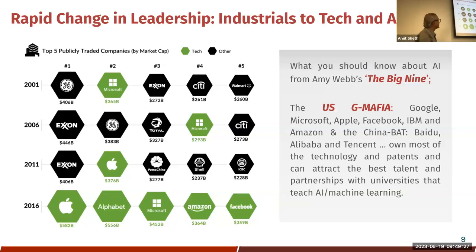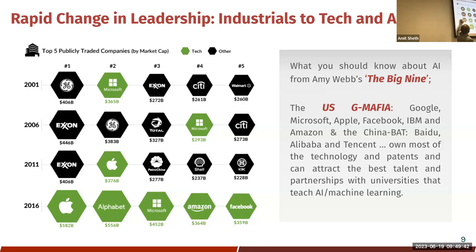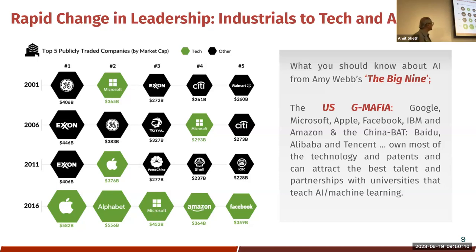Every five years, the most important companies change. Right now all the top leaders are AI companies. Earlier this year, Nvidia — which manufactures AI chips — became a trillion-dollar company and entered the top five. Facebook has dropped off. The technology companies investing in AI are on top today, and future companies that use AI may replace some of them.